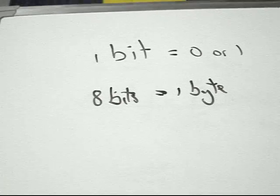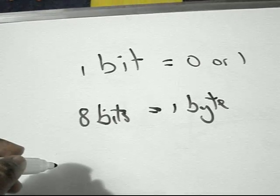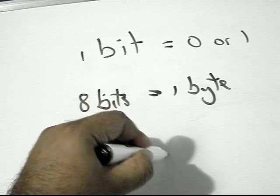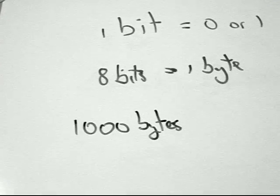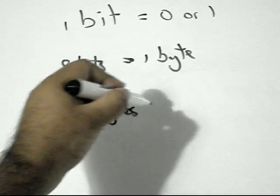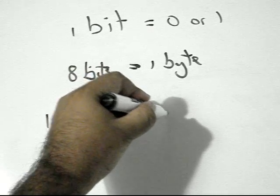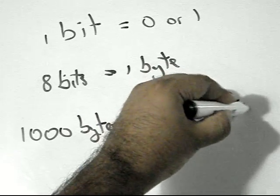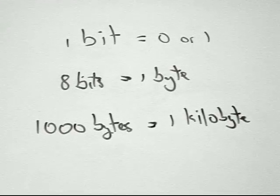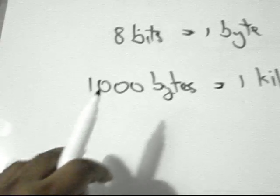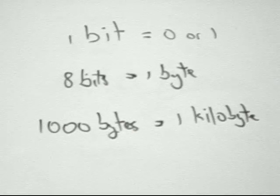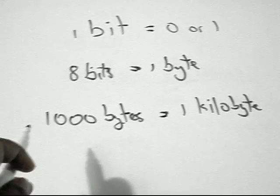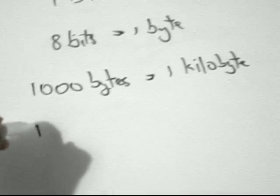So eight bits equals one byte. The byte is really what most people would understand nowadays. One byte, you could consider as a character. So one thousand bytes is equal to one kilobyte. Now this is really a simplified version—in theoretical knowledge it wouldn't be one thousand bytes, it's actually 1,024 bytes, a multiple of two. But just to make things simple, I decided to make it just a thousand so that you'd understand it a little better.